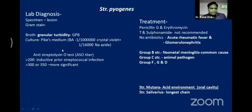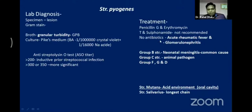Connect the specimen from the lesion to gram stain. Importantly, this organism gives granular turbidity in liquid broth. In Pike's medium it acts as a selective medium. You can do the ASO test in the laboratory and treat the patient with penicillin and erythromycin. However, there is no use of antibiotics in acute rheumatic fever and glomerulonephritis because there is no organism — it is only toxin-mediated intoxication.